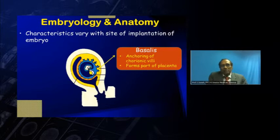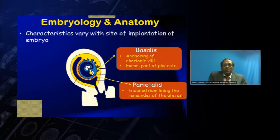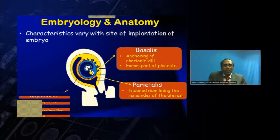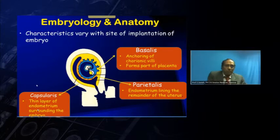In the placenta we have three layers. The first is called the decidua basalis, where the anchoring of the chorionic villi occurs, which forms part of the placenta — the decidua basalis literally forms part of the placenta because these villi invade into it to form the maternal-fetal unit. The second is the decidua parietalis, which is the endometrium lining the remainder of the uterus. The third is the decidua capsularis, a thin layer of endometrium surrounding the embryo.